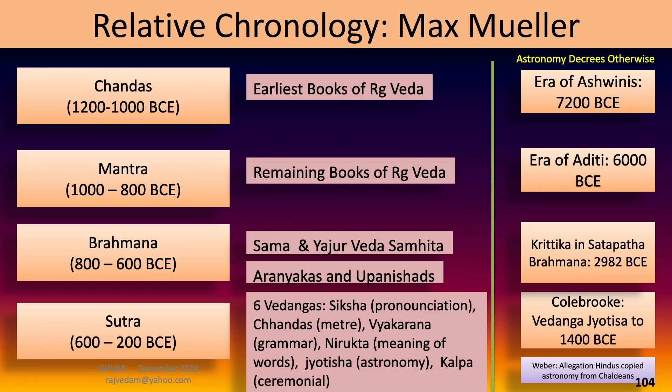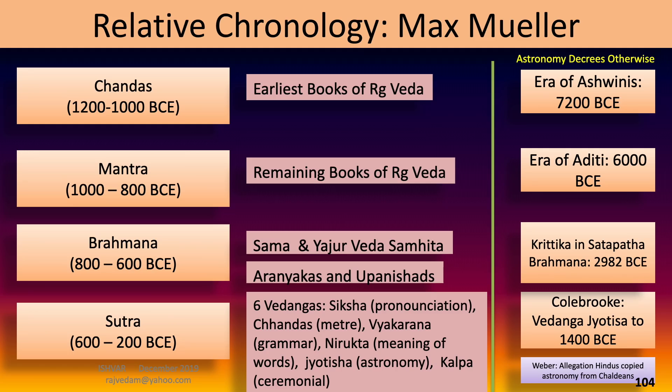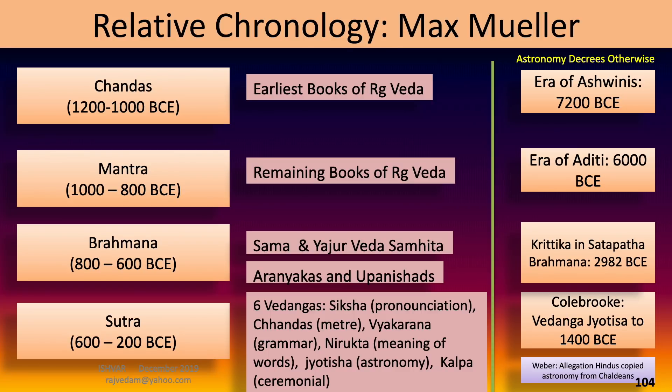However, using this astronomical model, Vedanga Jyotisha — one of the Vedangas — is dated to 1400 BCE. So where is 1400 BCE and where is Max Müller's 600–200 BCE for that period? He places the Brahmana period at that time frame, but we saw Kritika and Shatapatha Brahmana dated to 2982 BCE. Where is that and where is his 800 BCE? From the Rig Veda, the references to Aditi and Ashwini decoded by Lokamanya Tilak correspond to 7200 BCE and 6000 BCE. So using the astronomical model, you can demolish what Max Müller proposed for the Vedic periods — but unfortunately these dates are still continued in our textbooks at the college and university level.